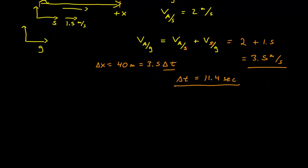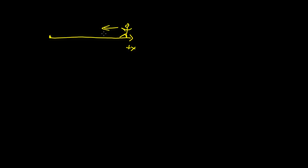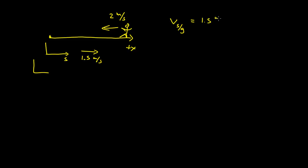Now we want to go back — let's turn it around and go backwards, keeping our coordinate system the same. Alice is now heading the other direction, but the sidewalk coordinate system is still moving in the positive x direction at 1.5 meters per second. Alice is moving the other direction at 2 meters per second. The velocity of the sidewalk relative to the ground is still positive 1.5 meters per second.